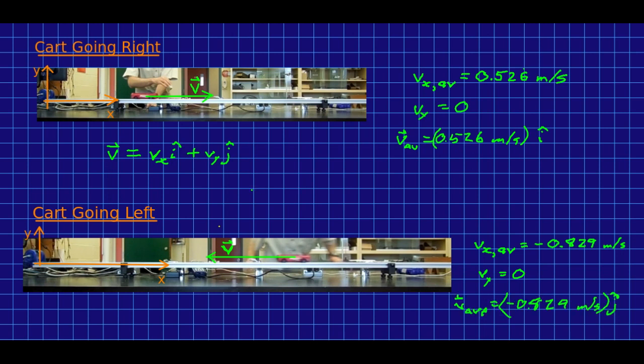But now we should think about what would have happened if we were using different axes. Now suppose that we orient our axes the other way around, with the x-axis pointing left. Now, you might not like that much, because I'm sure you're used to the x-axis pointing right. But just suppose that our motion sensor was at the other end of the track. Then it would be determining the position using that set of axes.